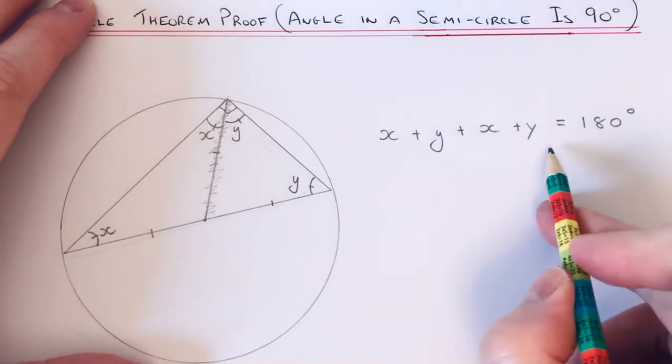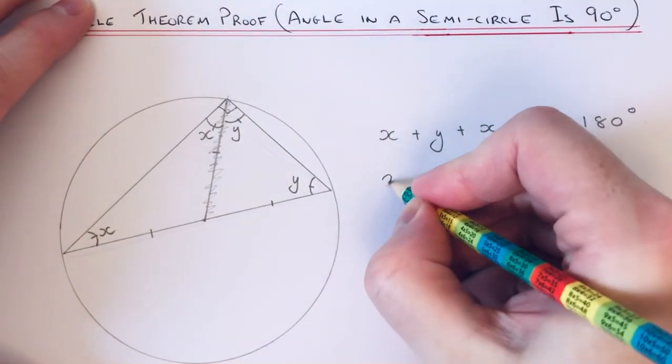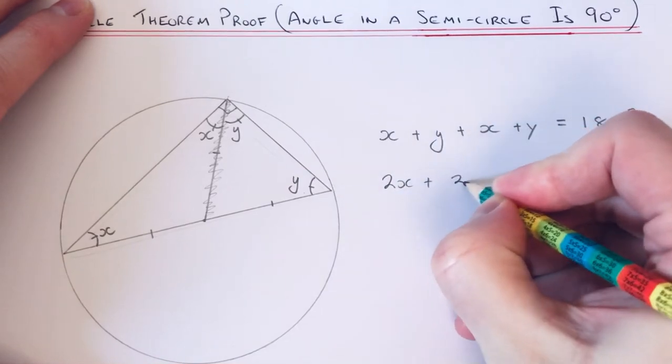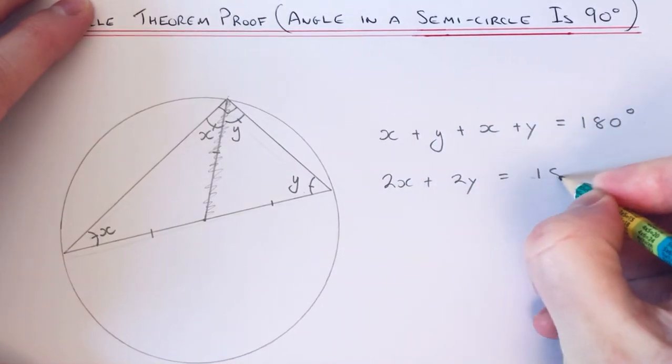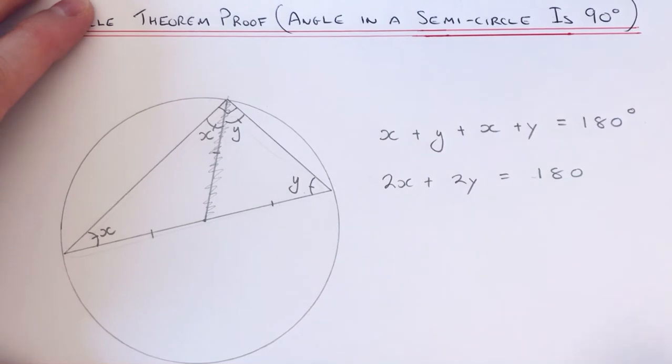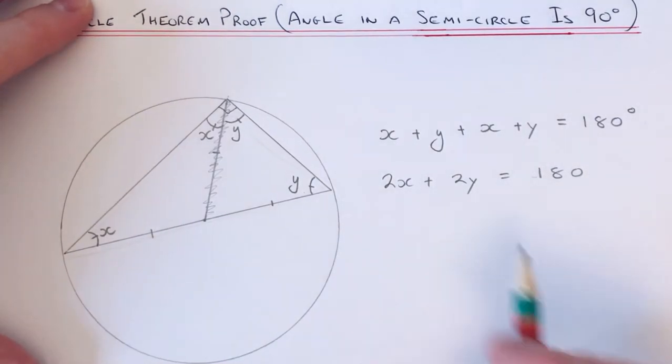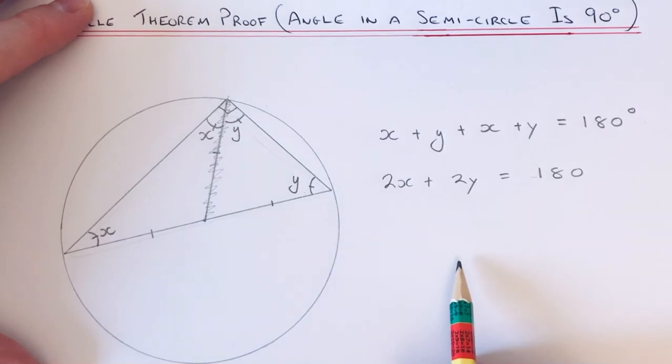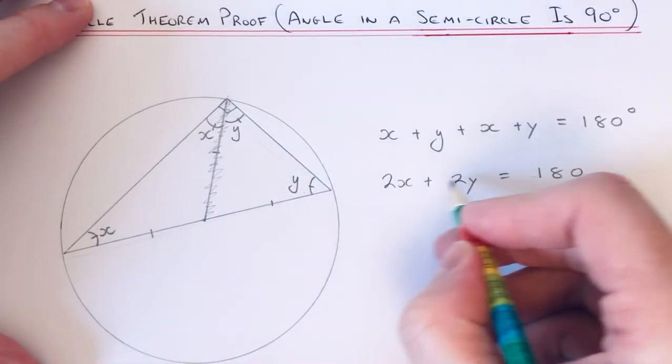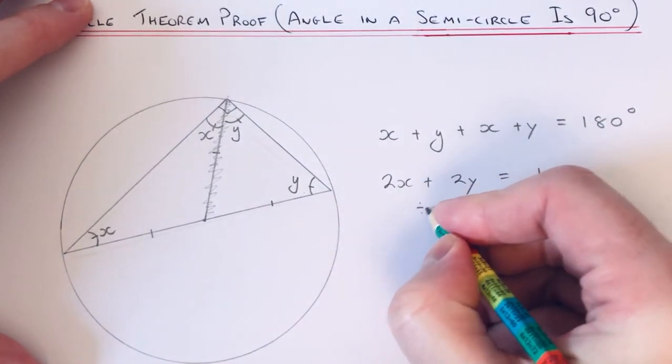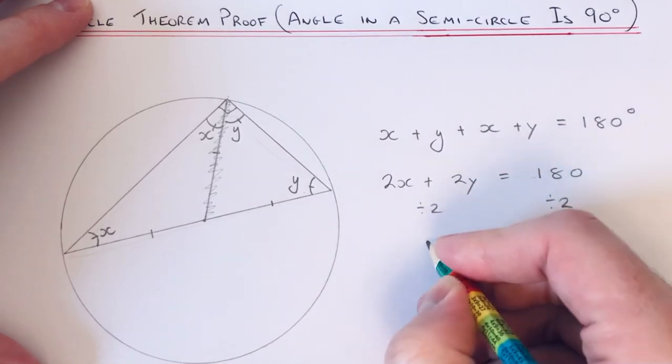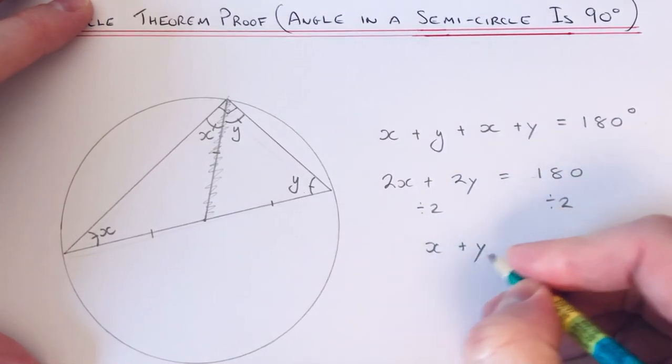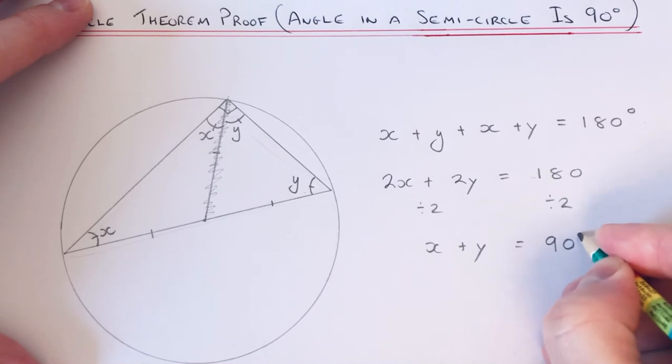So if we simplify this left-hand side, we get 2X plus 2Y equals 180. And then if you notice, we can divide the equation by 2 because everything is a multiple of 2, and we're left with X plus Y equals 90 degrees.